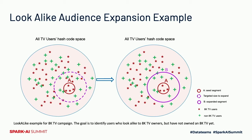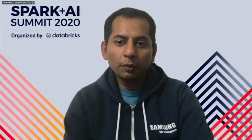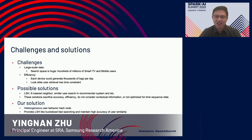In our lookalike audience expansion example, the full circle represents our entire TV universe. The small circle A is the seed audience. We want to find audiences similar to that seed. After applying our hashing technique, we determine circle B — an expanded segment of A. Given a seed audience A, we identify the expanded set B. My co-presenter Inan will now take us through the details of how the hashing technique works.